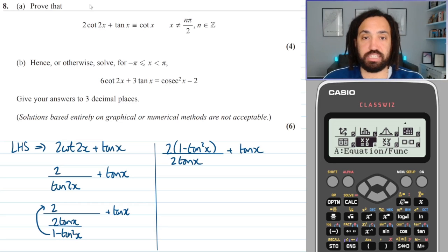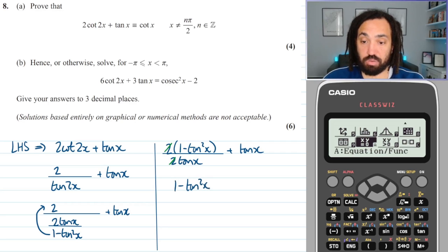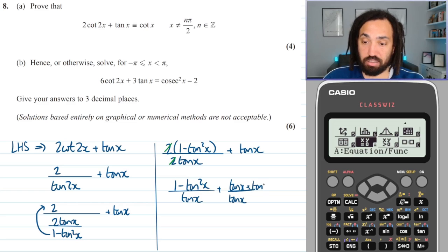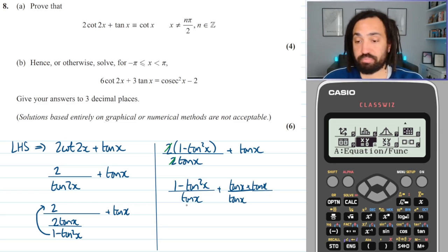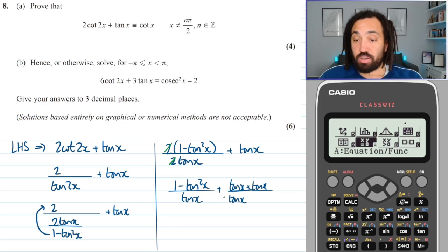Okay, so I can see an easy cancellation there. 2 is a factor of the top and it is a factor of the bottom so that can cancel. And now what we need to do is we need to create a single fraction. So what I'll need to do is I'll need to multiply this tan x here, top and bottom by tan x in order to force a denominator which is equivalent to the denominator here.